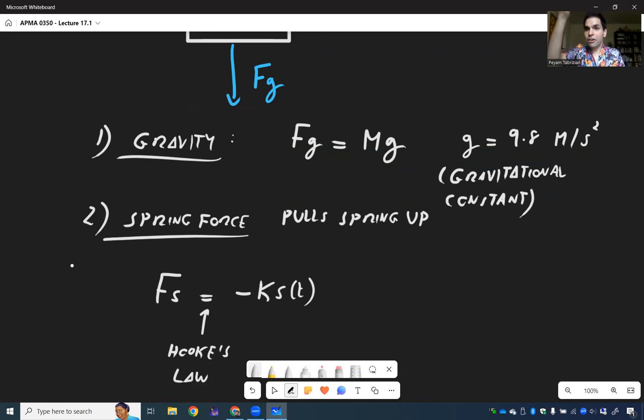In fact, think about it, the more we pull the mass down, the more it wants to pull it back up. That's why the minus sign. And K, again, is the material of this spring. But of course, we want to write this in terms of Y. So S is Y plus L, and so in the end, FS is minus KY minus KL.